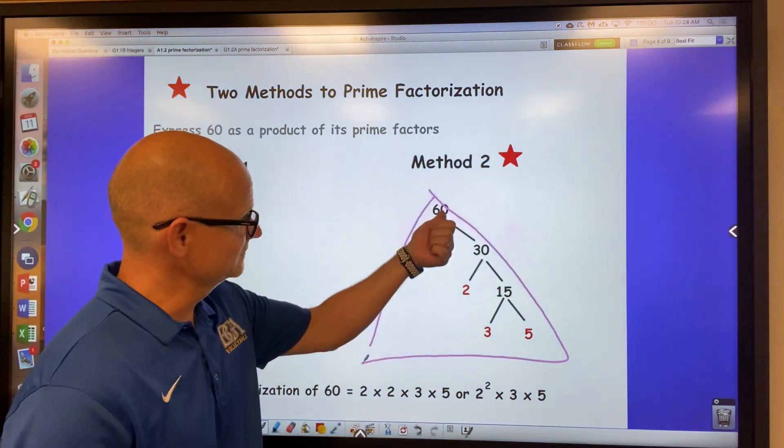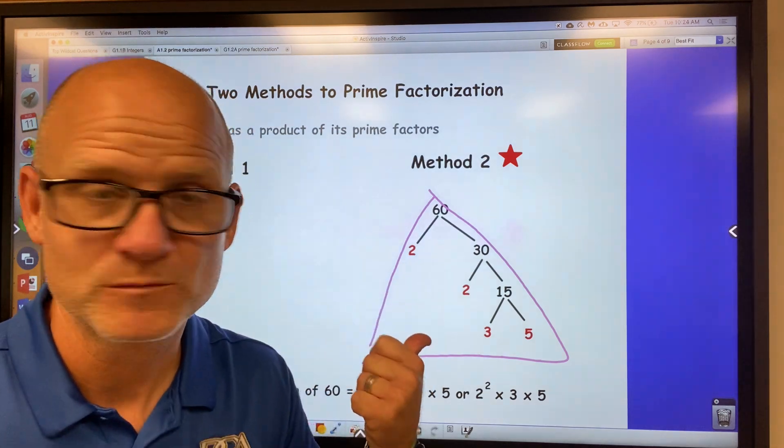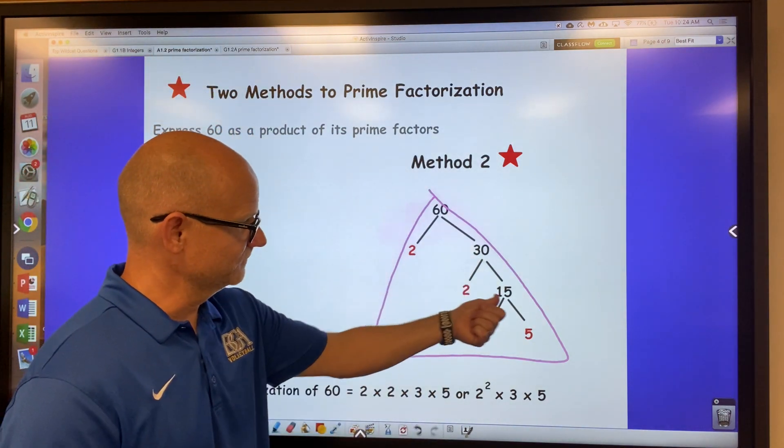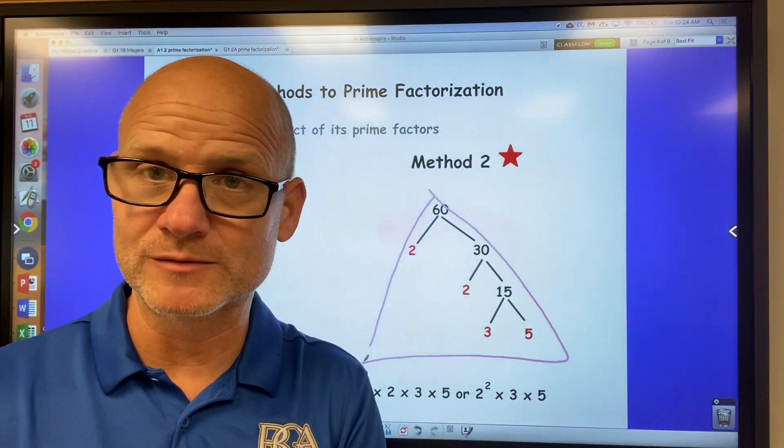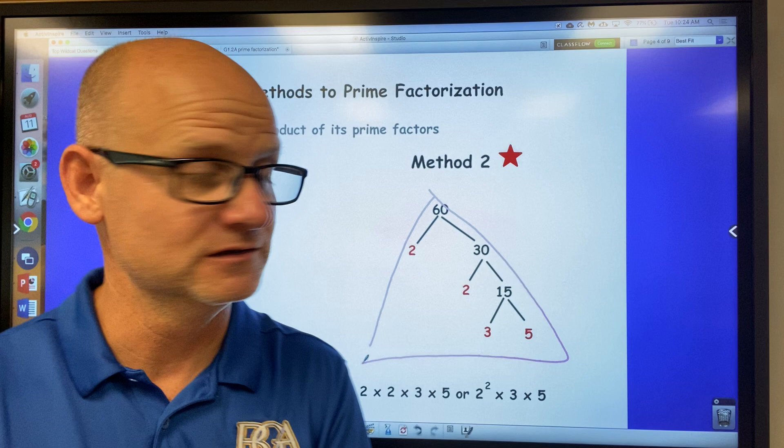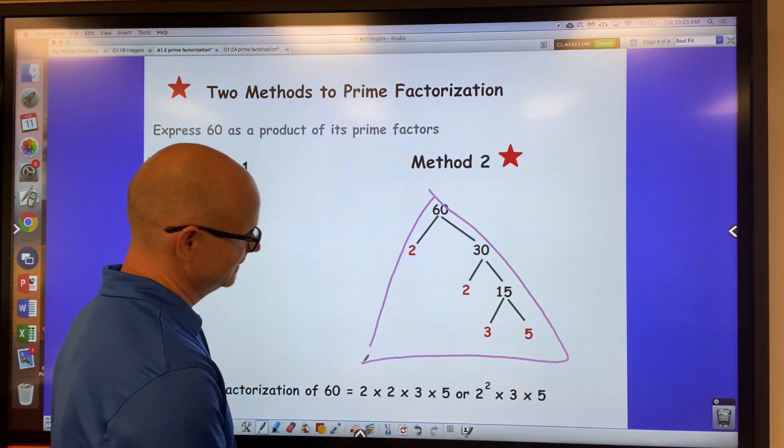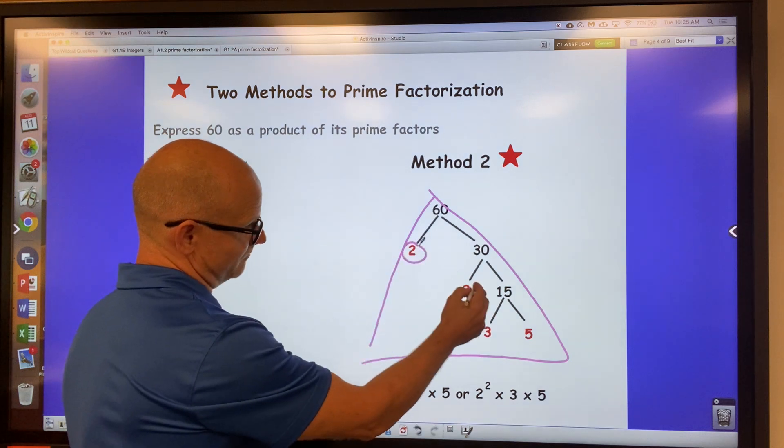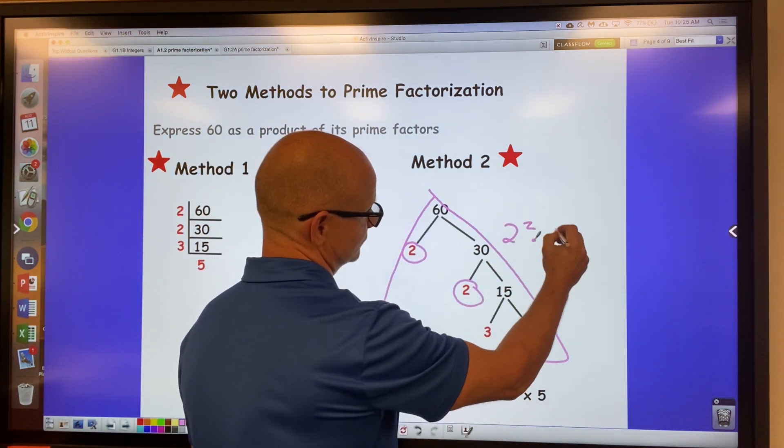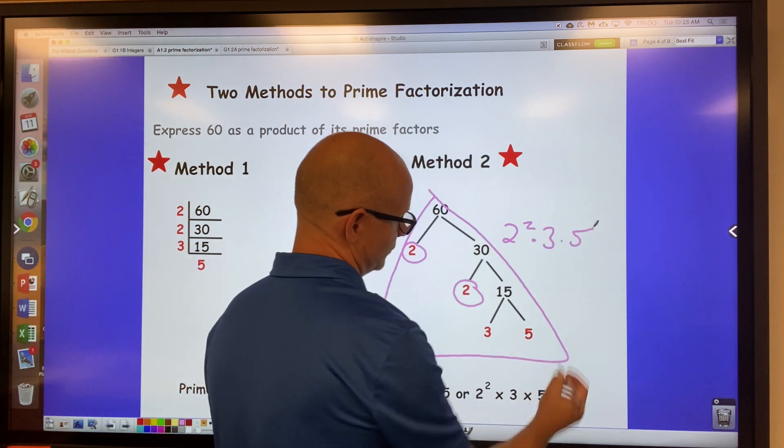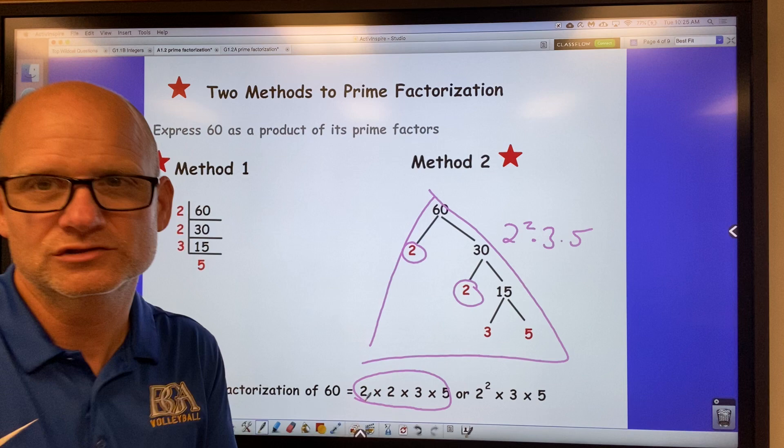For example, when I factored 60, I did two times 30. I can't factor two anymore because it's a prime number. But over here at 30, I factored two to 15, and I factored three to five. And now you're done. And now you have all prime numbers, and now you can write the equation. And so you can say the prime factorization of 60 is two to the second power times three times five. Or some people would just write two times two times three times five. That's fine, too.